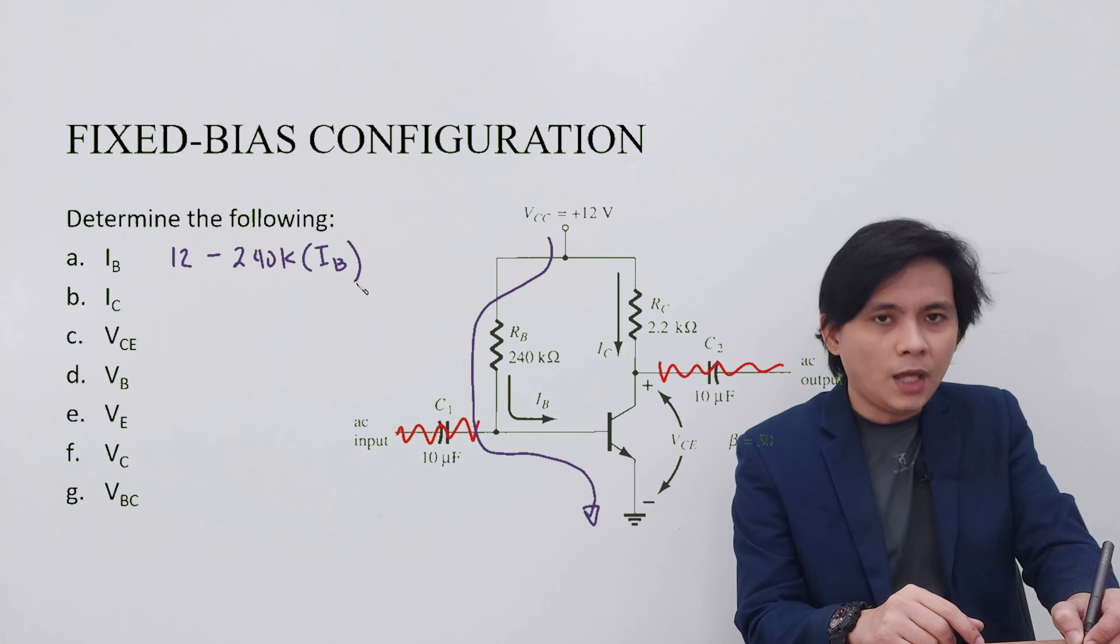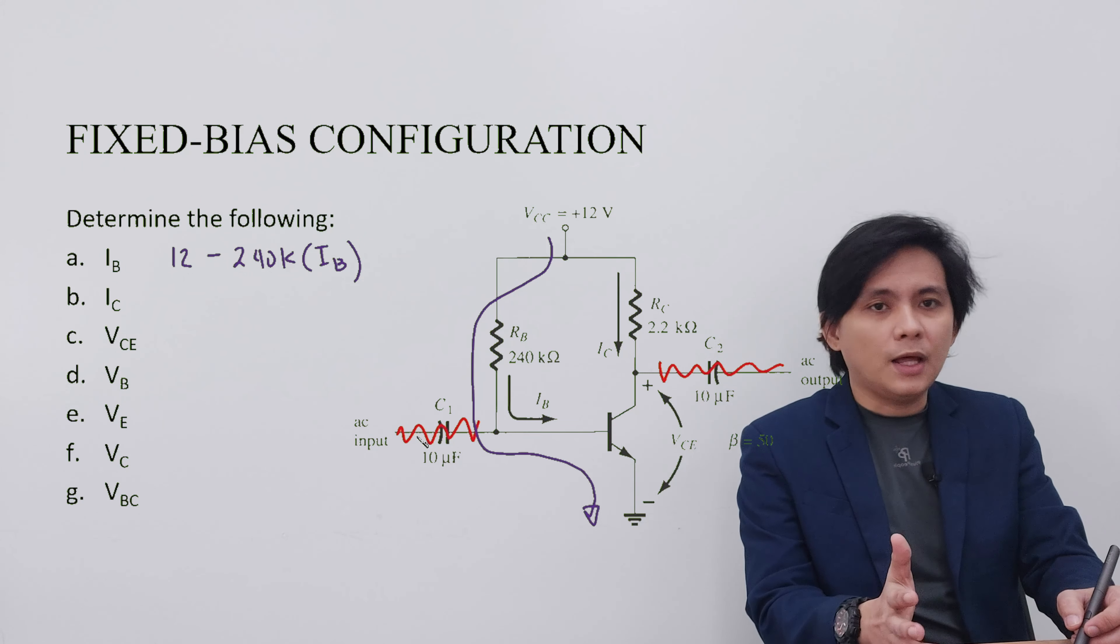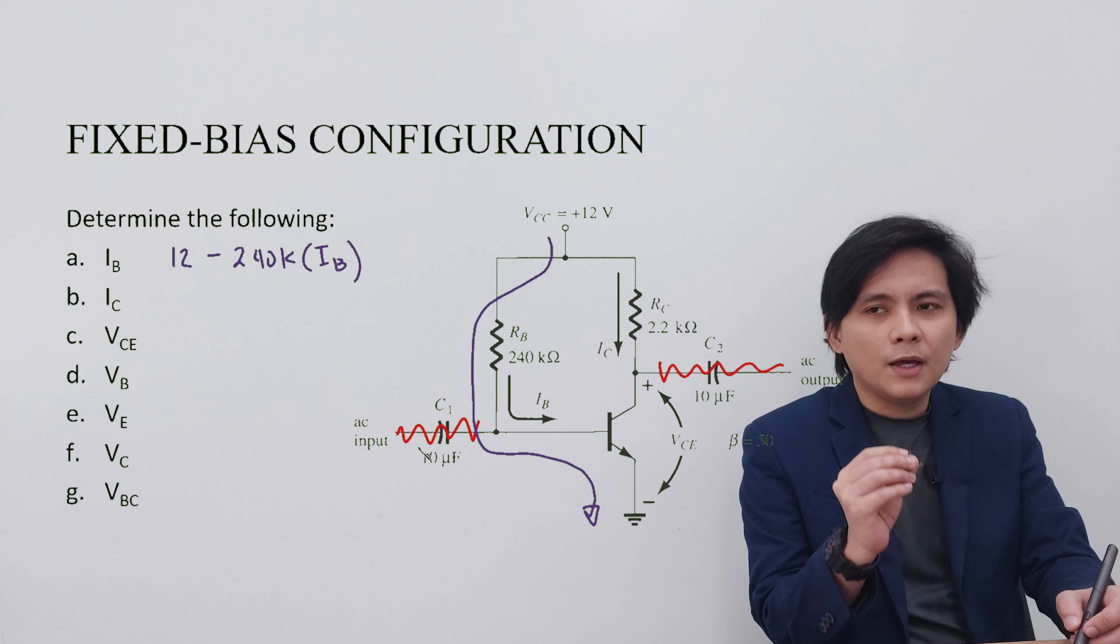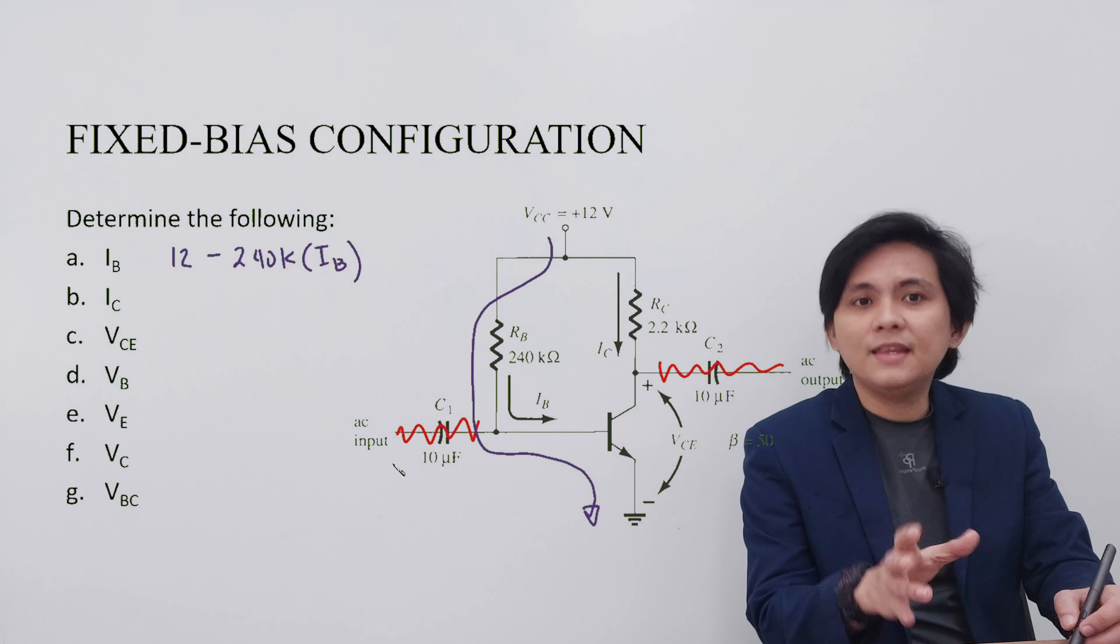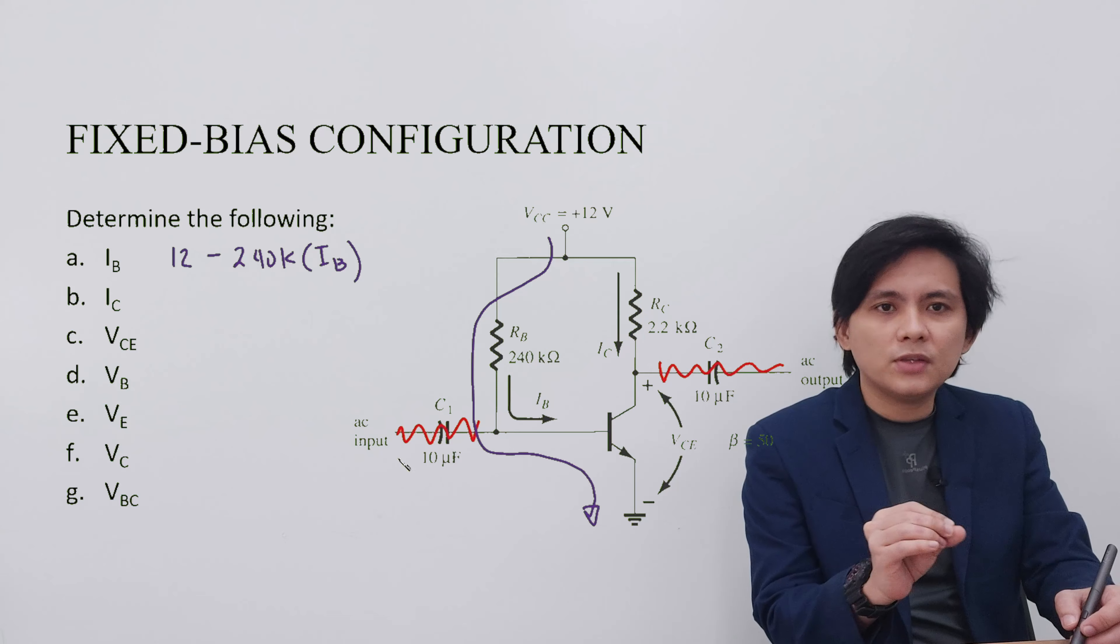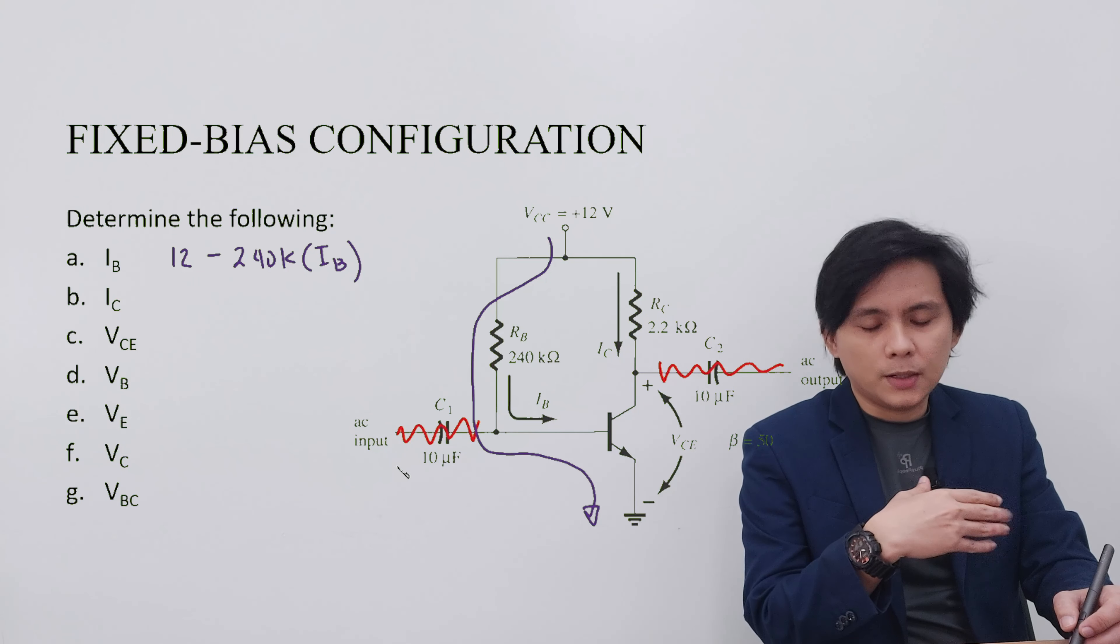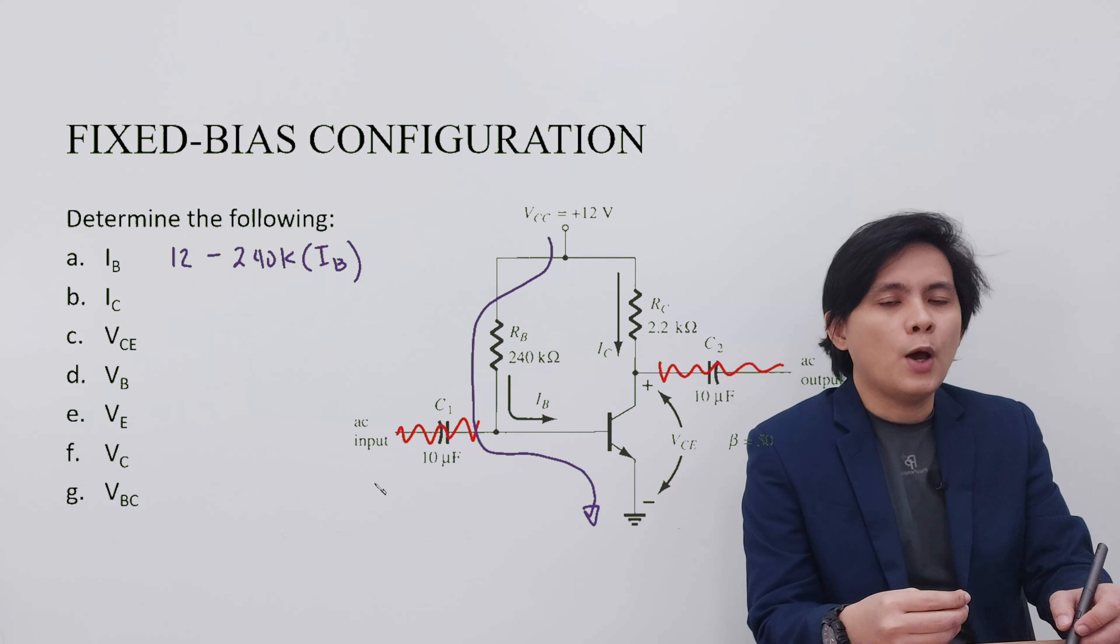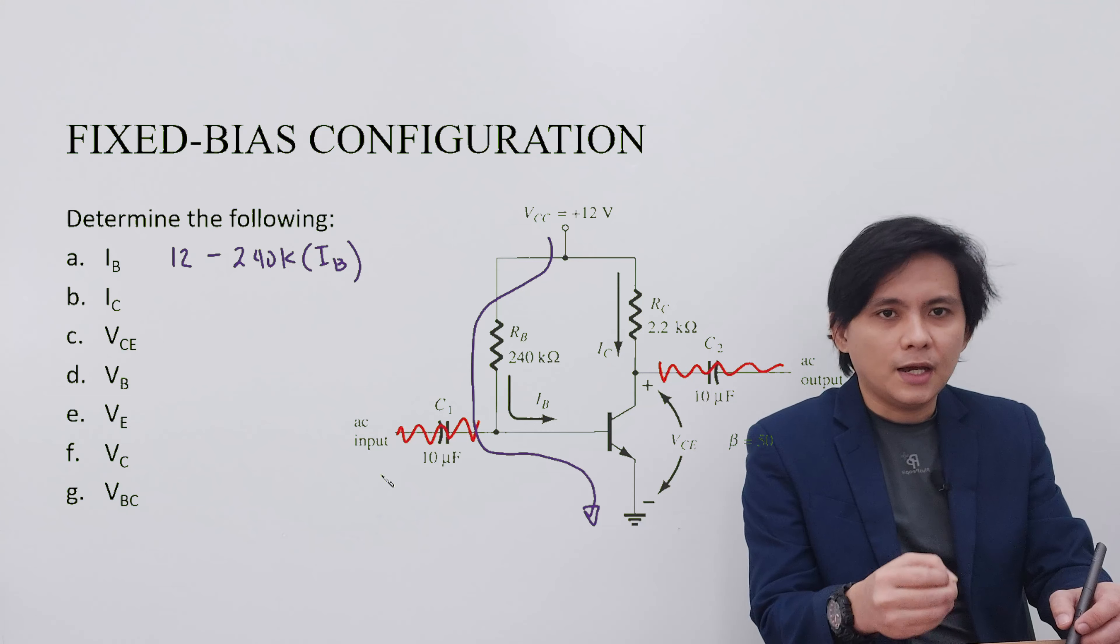Take note that the subscripts in all of these solutions are in capital letters. When we have capital letters, that indicates that the currents or voltages and other components are in DC. When you have encountered a subscript of lowercase letters, then that is an AC quantity.